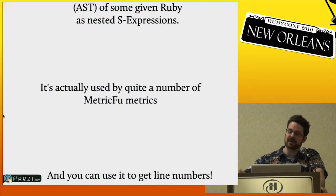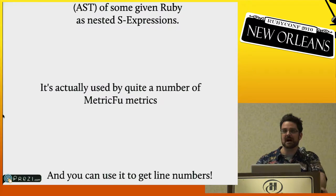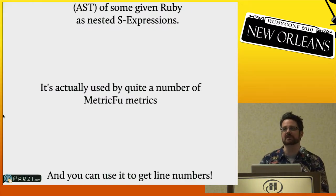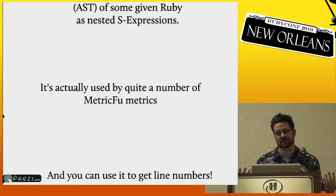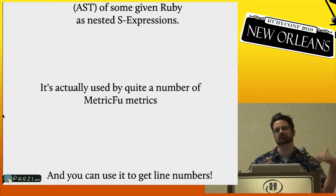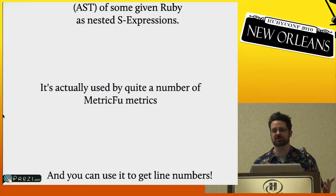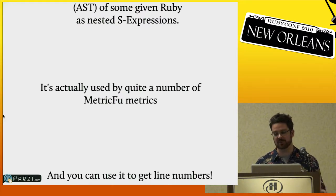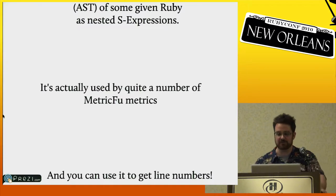Ruby Parser is behind the scenes of almost a large percentage of the metrics provided by MetricFu. MetricFu relies on things that try to find code complexity and code smells, which is very hard to do if you have to parse raw Ruby. But if you can use Ruby Parser to look at the abstract syntax tree, it becomes much easier. If you dig into the internals of a lot of those code smell detectors, you'll find a Ruby Parser in there.